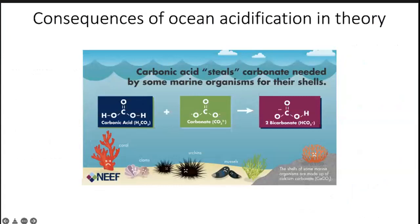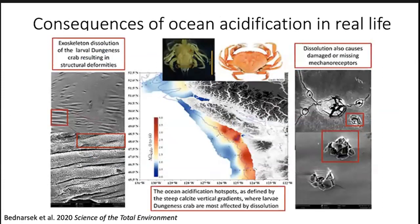One big potential implication is to calcifying marine organisms — those that build their shells or exoskeletons out of calcium carbonate. As the ocean absorbs carbon dioxide and creates carbonic acid, that acid steals carbonate ions out of the water that are needed for these organisms to build and maintain their shells. There are real consequences close to home on the West Coast: a recent study found that ocean acidification is dissolving the shells of baby Dungeness crabs, a key commercial and recreational fishery here in the Pacific Northwest. This is just one of hundreds of studies documenting negative effects of ocean acidification on calcifying marine life.